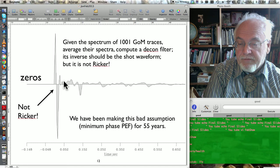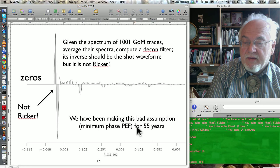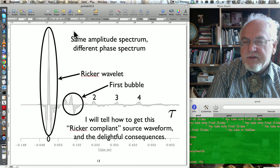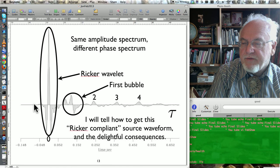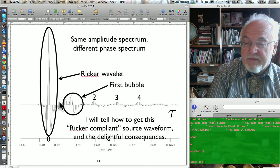So we've been making this assumption for 55 years. So really, what's going on? Have we been goofing up that long? I think so. Well, using the same amplitude spectrum, I can find a different phase spectrum, which is not causal. There's something leaking out here before t equals zero. And this is a Ricker wavelet, and it's got all the bubbles on it. I'm going to tell you how to get this.